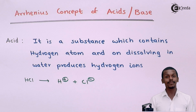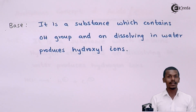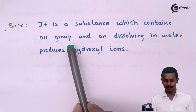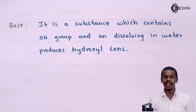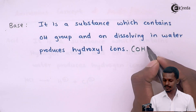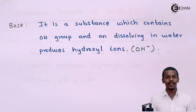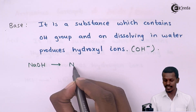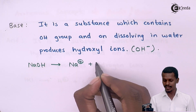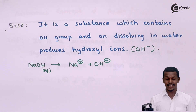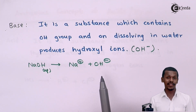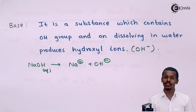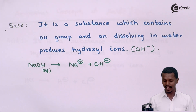Now let us talk about the base. What is a base according to the Arrhenius concept? It is a substance which contains an OH group and on dissolving in water it produces hydroxyl ions — that is, OH⁻ ions. We know that NaOH is called a base, and on dissociation it gives Na⁺ and OH⁻.